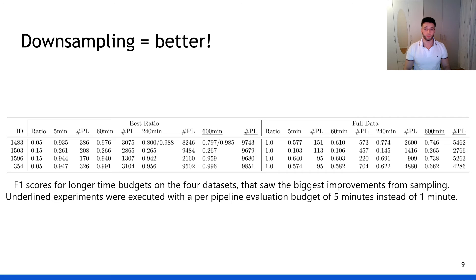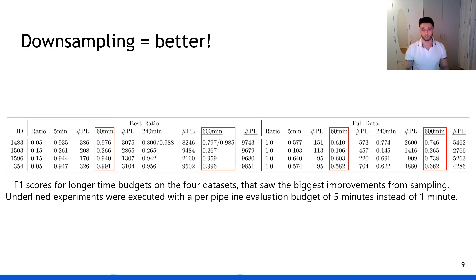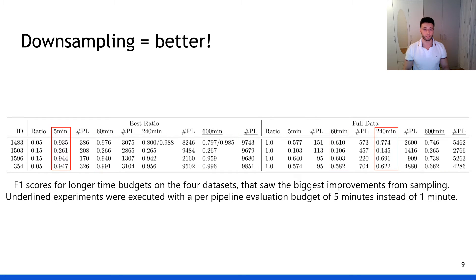We repeated the experiments for the four datasets with the largest performance improvement under the best downsampling ratio and ran them again for 4 and 10 hours. Increasing the time budget to 10 hours only marginally increases performance compared to the one-hour results when downsampling. For the full data experiments, the improvements are larger. However, for all four datasets, we find that the optimally sampled 5-minute pipeline performs better than the one produced by a 4-hour search on the full dataset. For 3 out of 4 datasets, this still holds true for the 10-hour time budget.